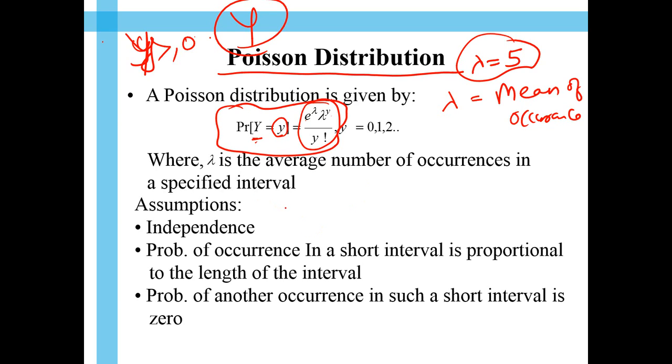There are some assumptions over here. And one needs to give importance to that. The assumption of independence. The occurrences should be independent of each other. The probability of occurrence in short interval is proportional to the length of the interval.